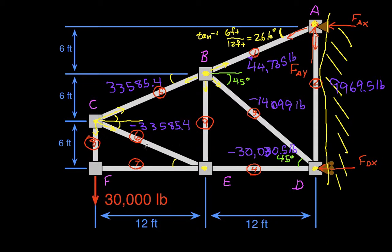T6 is minus 33,585.4 pounds. T7 is 0. We'll come back to that in just a second. T8 is 30,076.3 pounds. And T9 is minus 33,000. Oops, that's not correct.